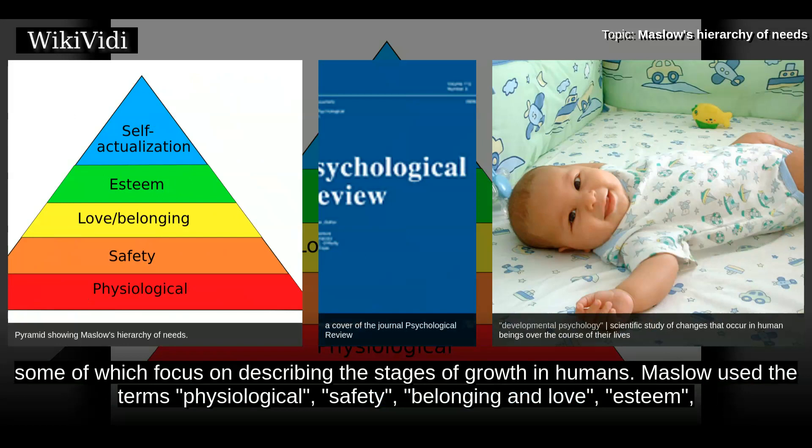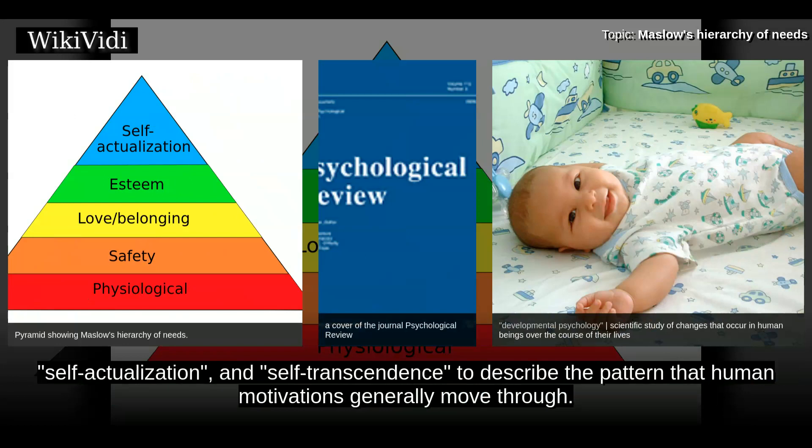Maslow used the terms physiological, safety, belonging and love, esteem, self-actualization, and self-transcendence to describe the pattern that human motivations generally move through.